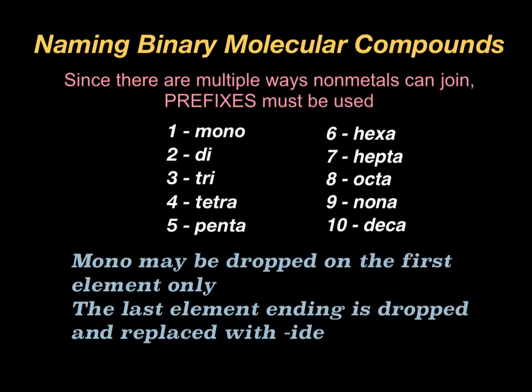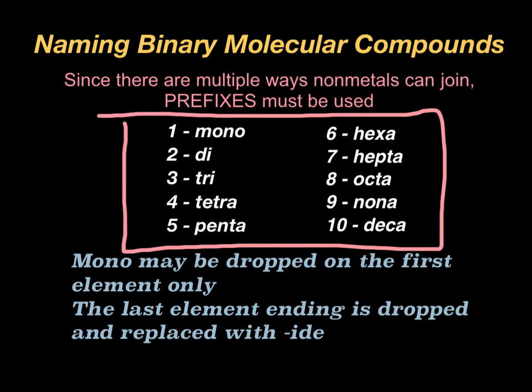And that naming system involves prefixes. These are prefixes that you need to know and you need to memorize in order to name binary molecular compounds. The prefix for one is mono, two is di, three is tri, four is tetra, five is penta, six hexa, seven hepta, eight octa, nine nona, and ten deca.